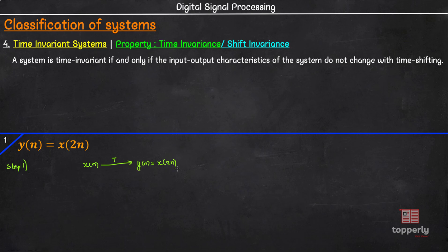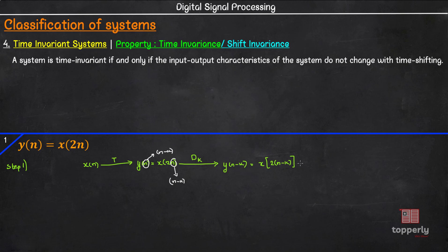Now, we will feed this y(n) to a delay system which will delay y(n) by k units. To find the delayed output, we need to replace n with n − k. So the output is y(n − k) = x(2(n − k)) = x(2n − 2k). Coming to step 2, we will first provide x(n) to the same delay system. The output here will be x(n − k).